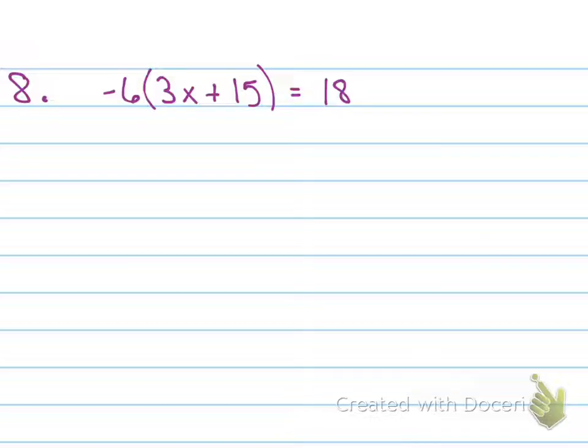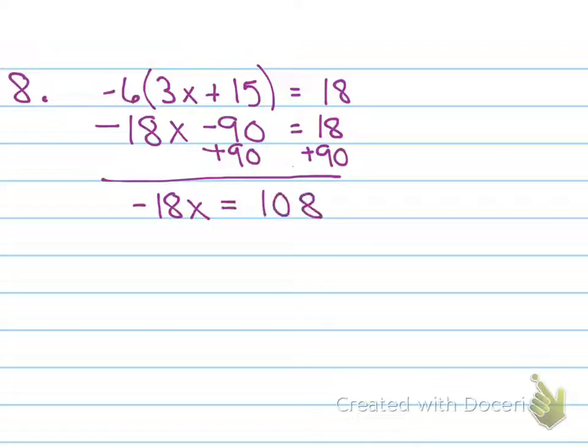First thing we need to do is distribute a property. We multiply, we distribute the negative 6, and then we need to add 90 to both sides. And now we just solve like normal. I divide both sides by negative 18. X is negative 6. Did you get negative 6? Very good.